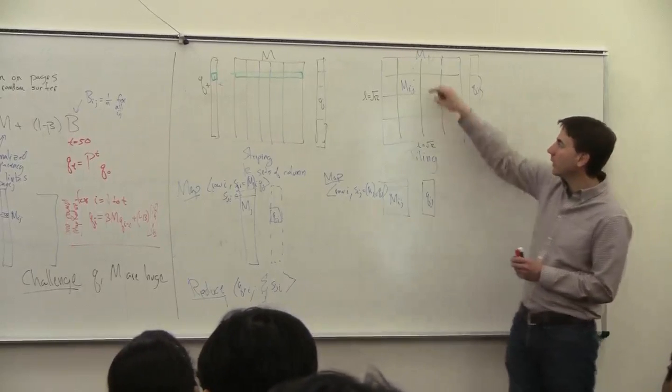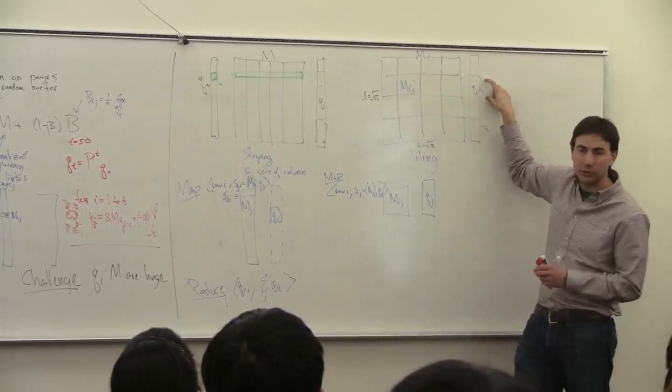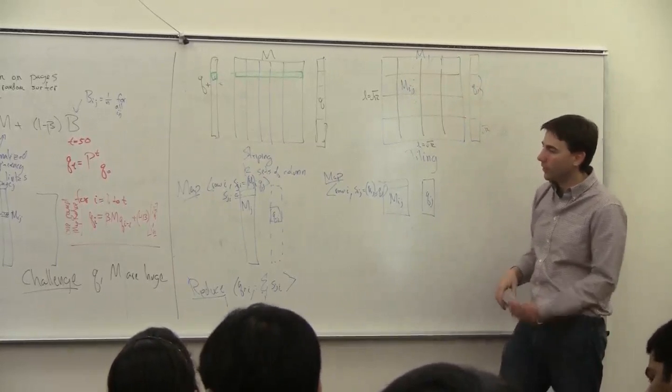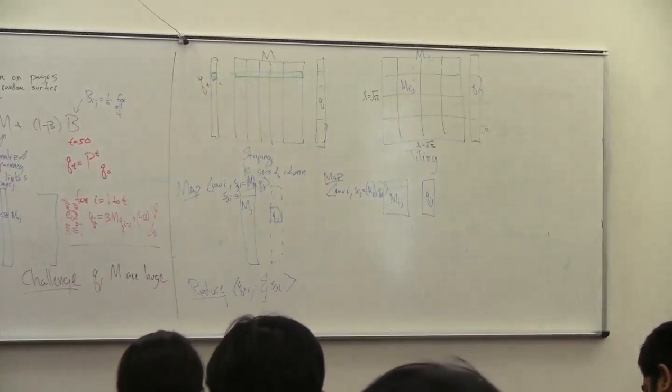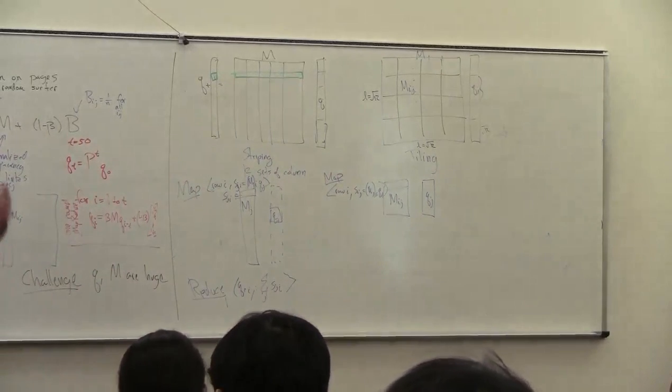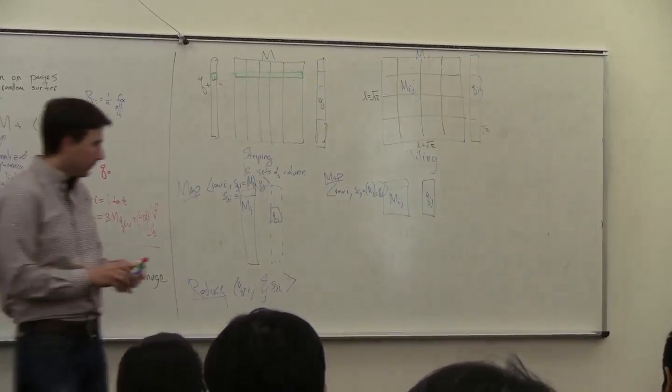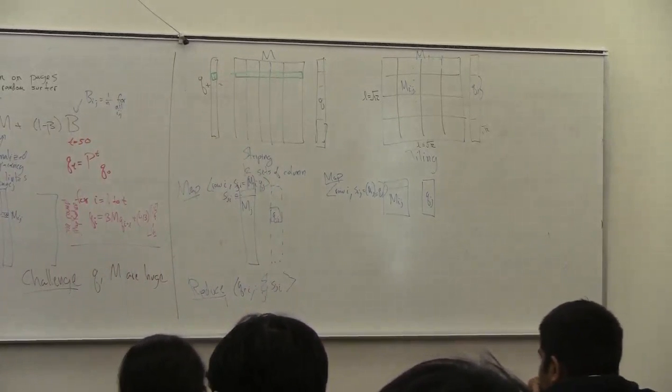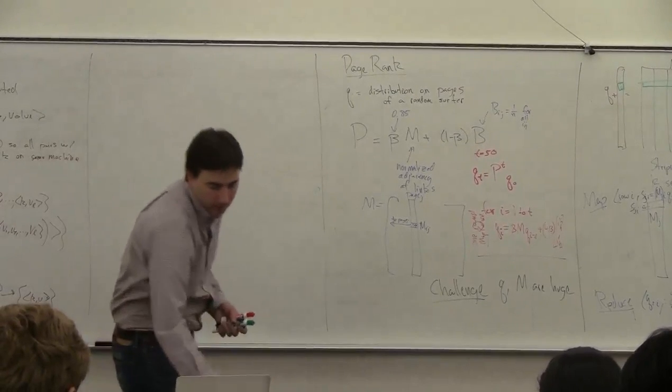So this actually works better even though you're storing each of these segments square root K times. The space here really is not too much of a problem. So you're already storing square root K of these web pages on this machine, so you can store this, which is no more than the size of each of these web pages. Okay, so let me go through a small example of this.